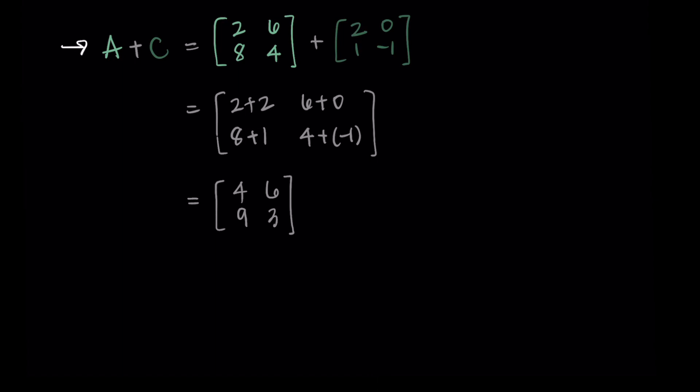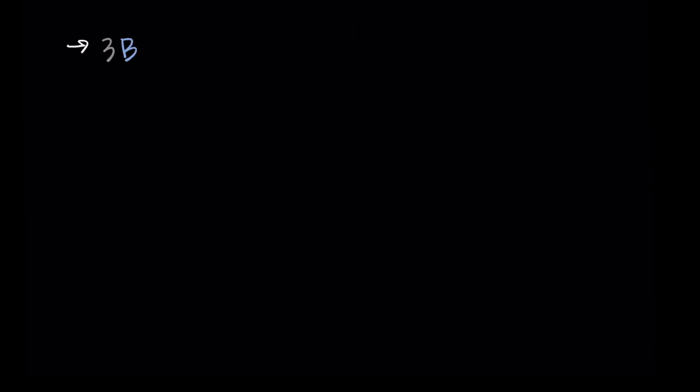All right, next let's do three times B. We're taking this scalar three and multiplying it by the matrix B, and I'm just going to distribute three into each of the terms. So I have 3×0, 3×(-1), 3×4, 3×3, 3×5, 3×(-2). Then I simplify, so my resulting matrix is [0, -3, 12, 9, 15, -6]. Simple as that.